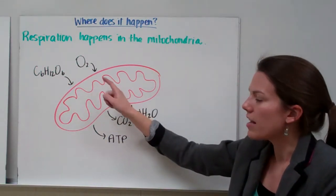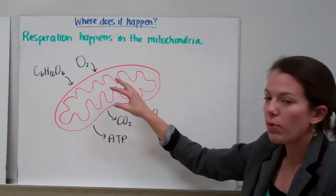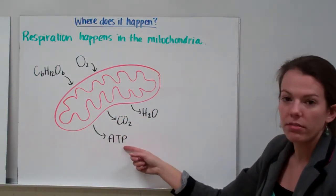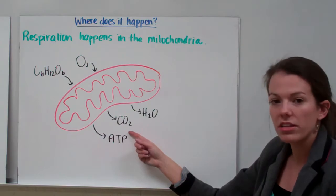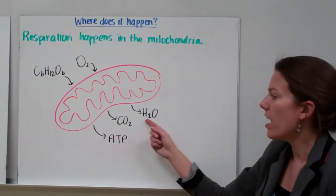and our oxygen gas. Those are our ingredients for respiration. Then we're going to break apart that sugar and release energy, or ATP. We're also going to release carbon dioxide gas and water.